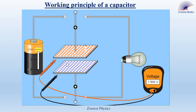When we disconnect the battery using this switch, the potential difference between the two plates remains 1.5 volts and the charge on each plate doesn't change, because we have an insulating material between the two plates so electrons cannot transfer through it. The charged capacitor stores electric energy and acts as a small battery. Observe what will happen when we connect this charged capacitor to this lamp using this switch.